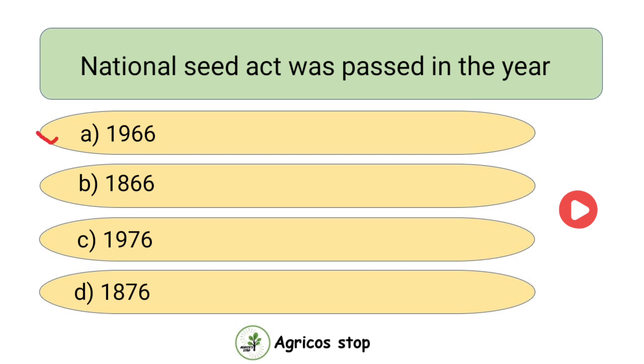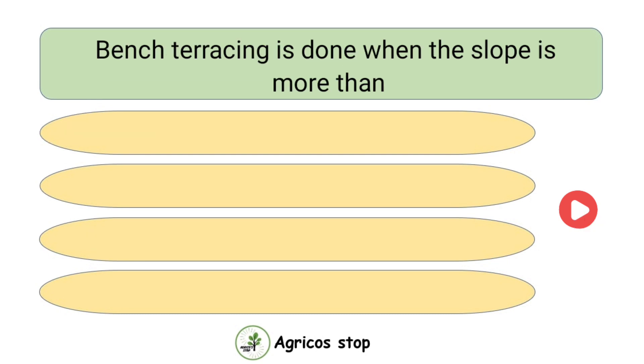National Seed Act was passed in the year — options are 1966, 1866, 1976, and 1876. The answer is 1966. National Seed Act was passed in the year 1966.